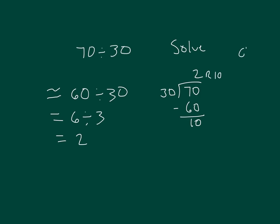Our check, the inverse operation, is multiplication. So we take 30, multiply it by 2, and then add 10. 60 plus 10 is 70. So our solution checks.